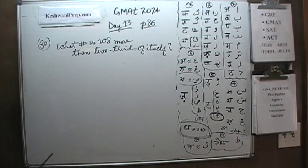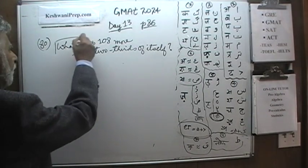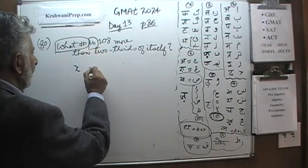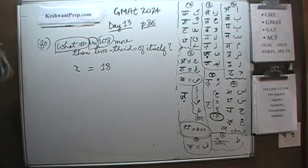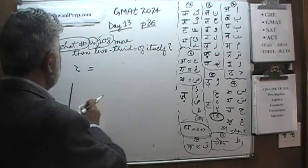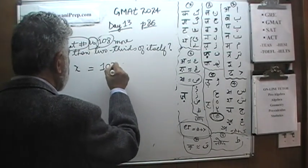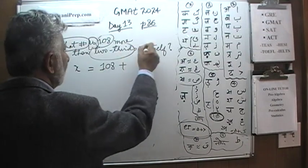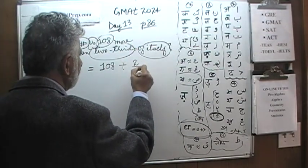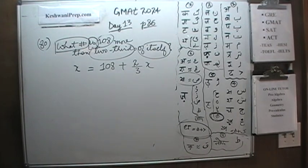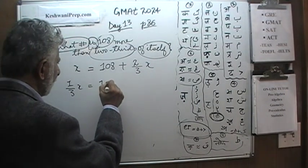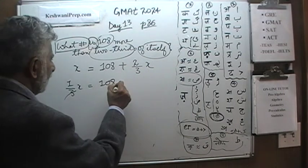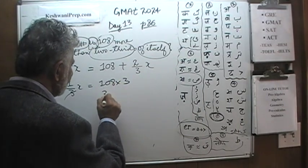Okay, here we go. What number - that's our unknown X - is, means equals, 108 more than two-thirds of itself. So X = 108 + (2/3)X. That's all. Subtract two-thirds from both sides and we find that one-third X equals 108, which means X must be 108 times 3, which is 324. Very straightforward, very simple.